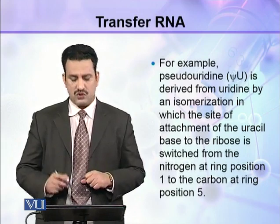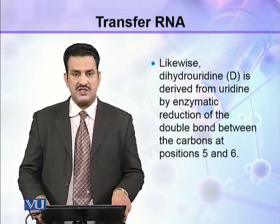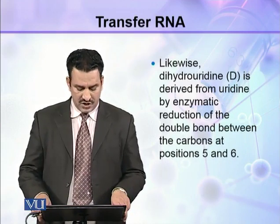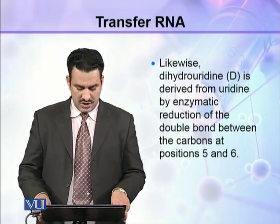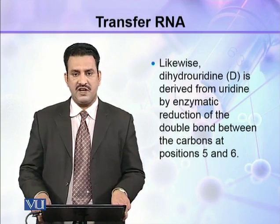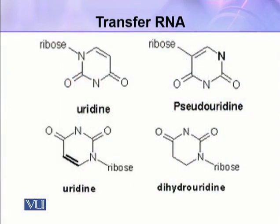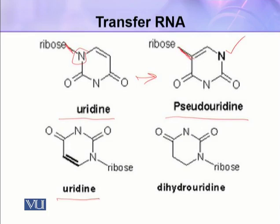This modified form is called pseudo-uridine. Likewise, dihydro-uridine is derived from uridine by enzymatic reduction of the double bond between the carbons at position 5 and 6. In dihydro-uridine, this double bond is gone.